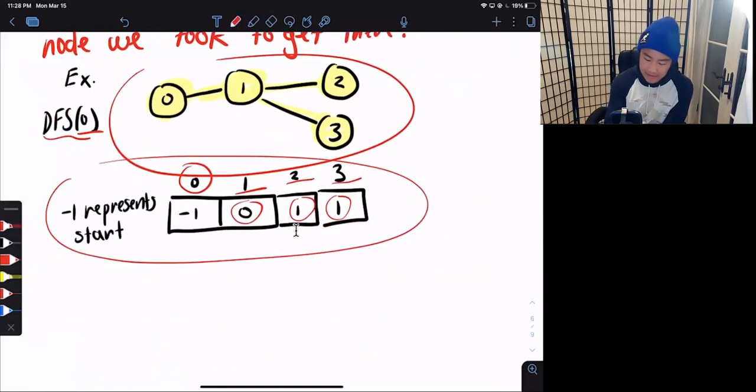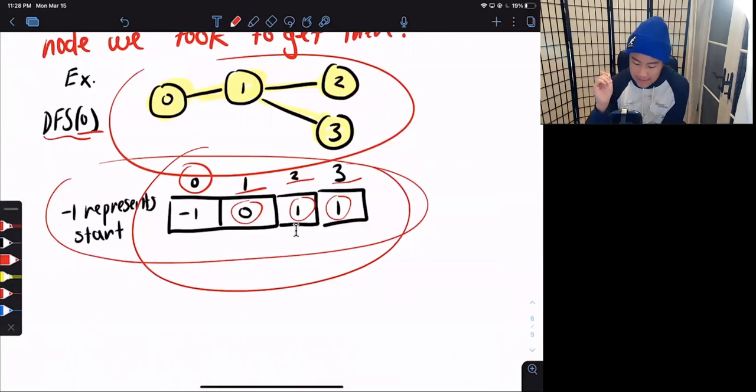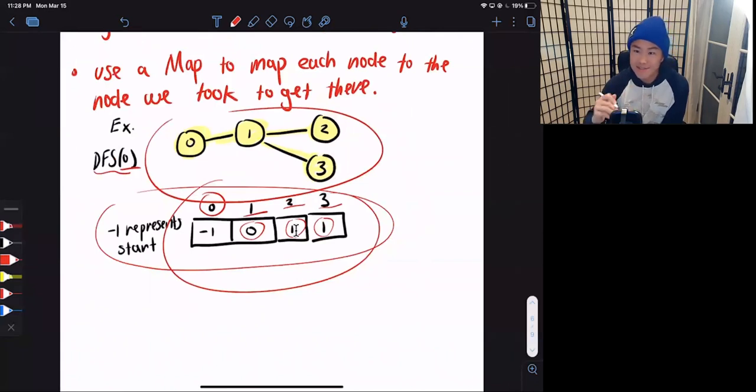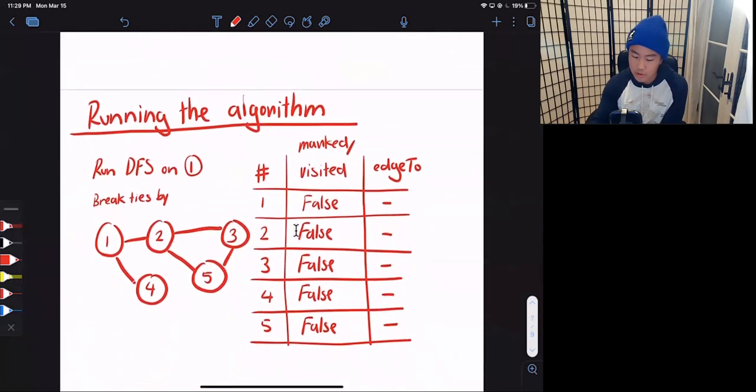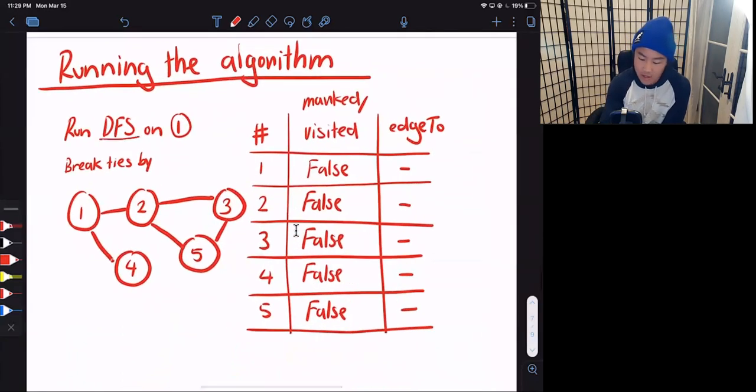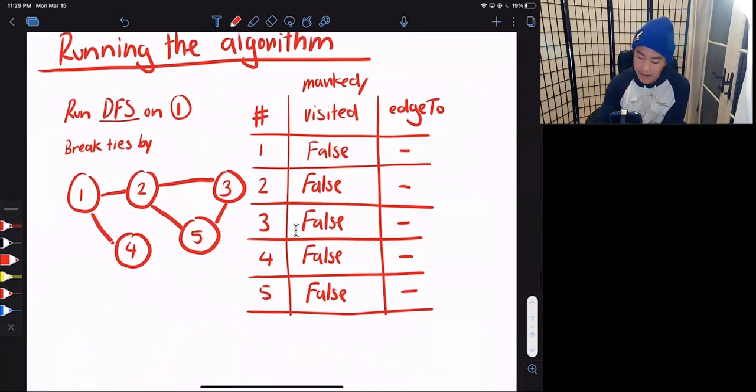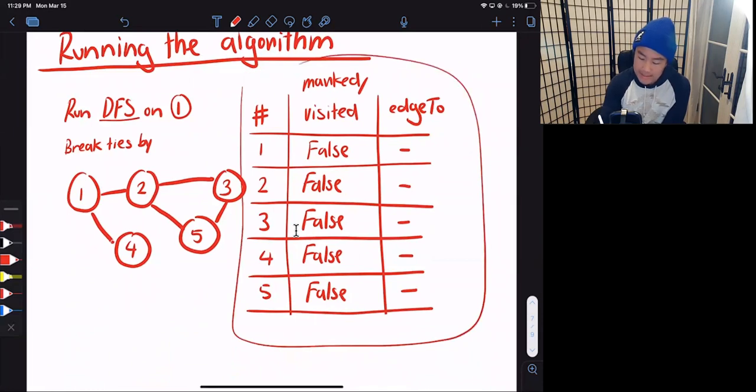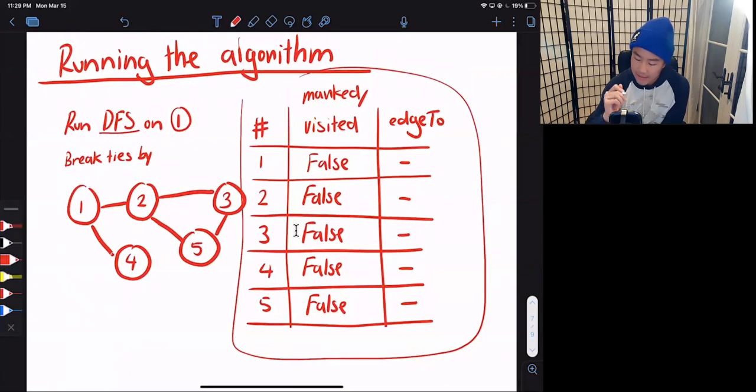So by having this information, this allows us to ignore when we're looking at a node that we took to get to the current node. So let's now go into running the algorithm. So let's say we run this modified DFS on node 1. And we break ties by numerical order. And so right here, this is where we store the Boolean array, which is right here. This is the Boolean array. Right here, this is how we map each node to the node that we took to get to that node. And so initially, all of our Boolean array is initialized as false and all of our edge 2 is now initialized as null.